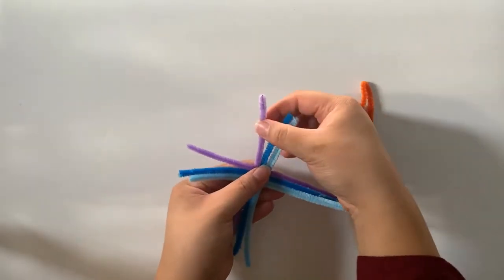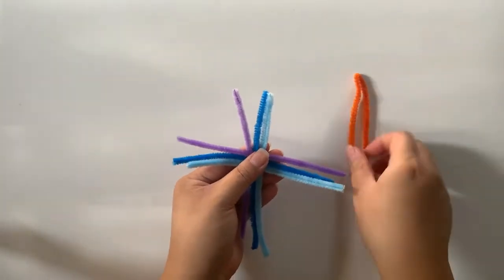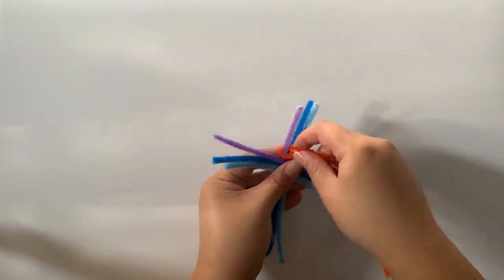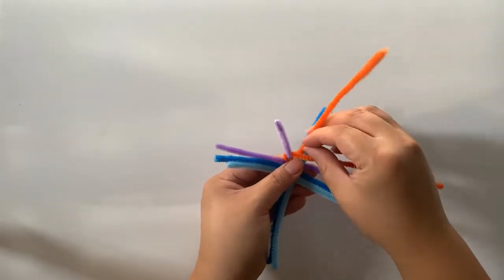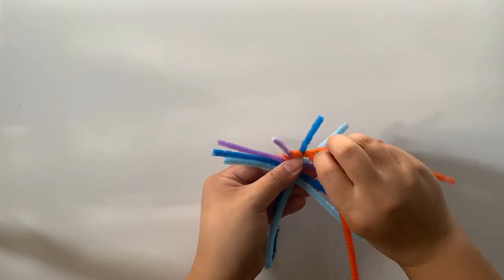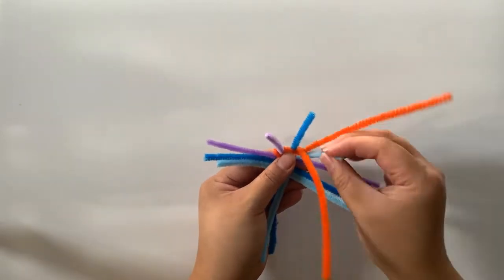Take half of the shorter pipe cleaners and lay them on top of the other half. Fold another pipe cleaner and use this to start your weaving. And then twist the folded pipe cleaner to secure it in place.